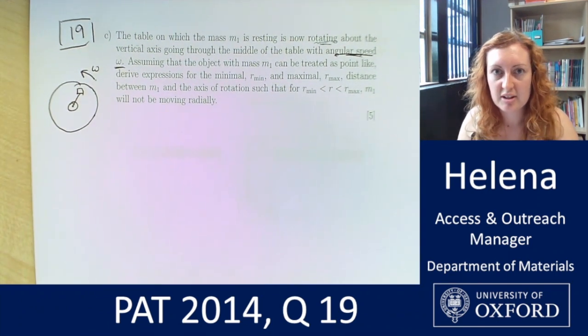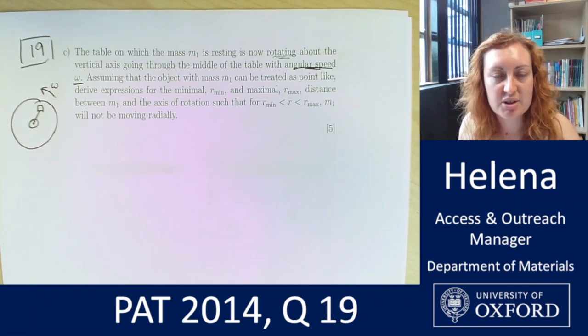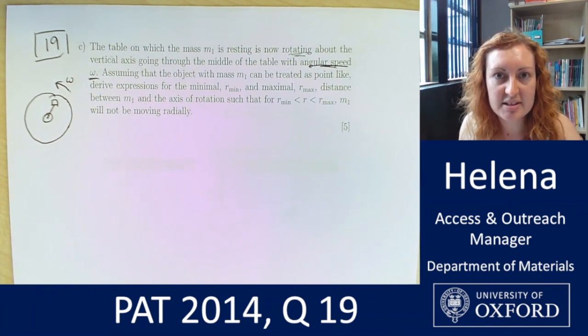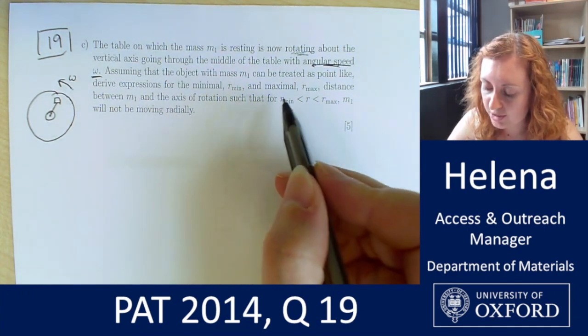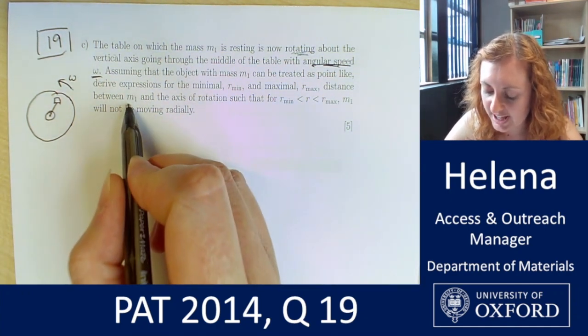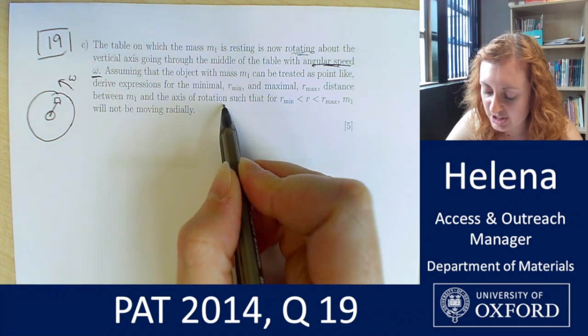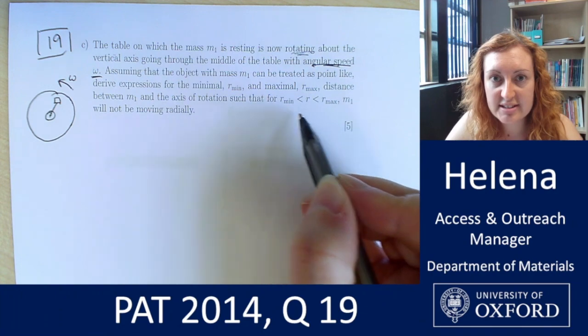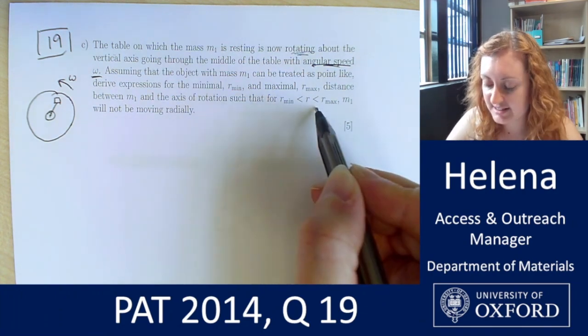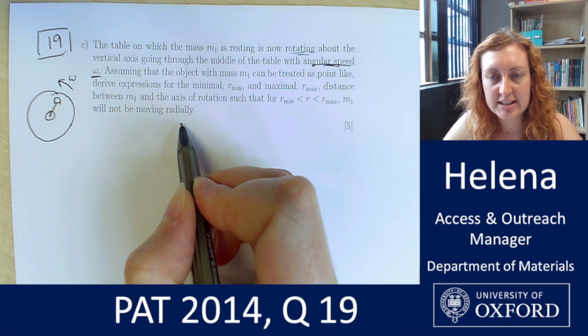So what are we being asked to calculate now? We're being asked to calculate expressions for the minimal and maximal distance between M1 and the axis of rotation, so the center of that hole, such that for between distances M1 is not moving radially.